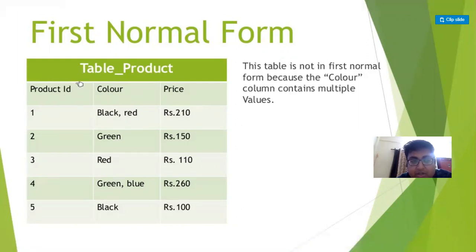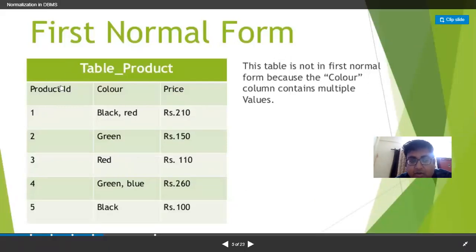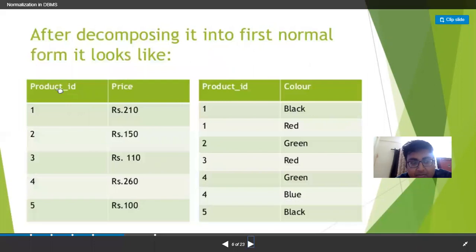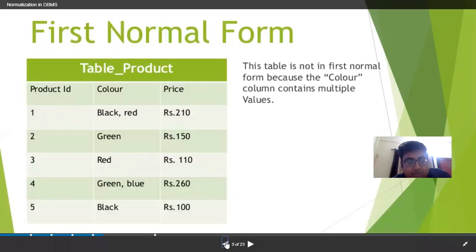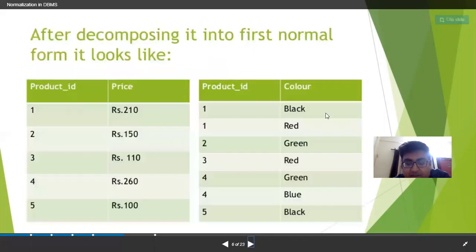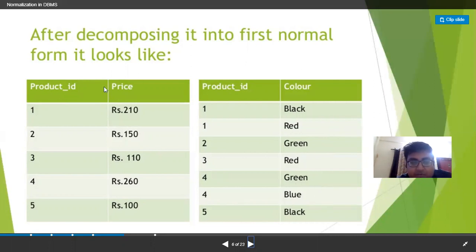We always decompose based on the primary key of the table. After decomposition, product ID 1 has two separate records: one for black and one for red — both unique. Combined, one-comma-black and one-comma-red are unique, not redundant. Similarly, four-green and four-blue are unique. By decomposing, we remove the problem of multi-value dependency and redundancy.